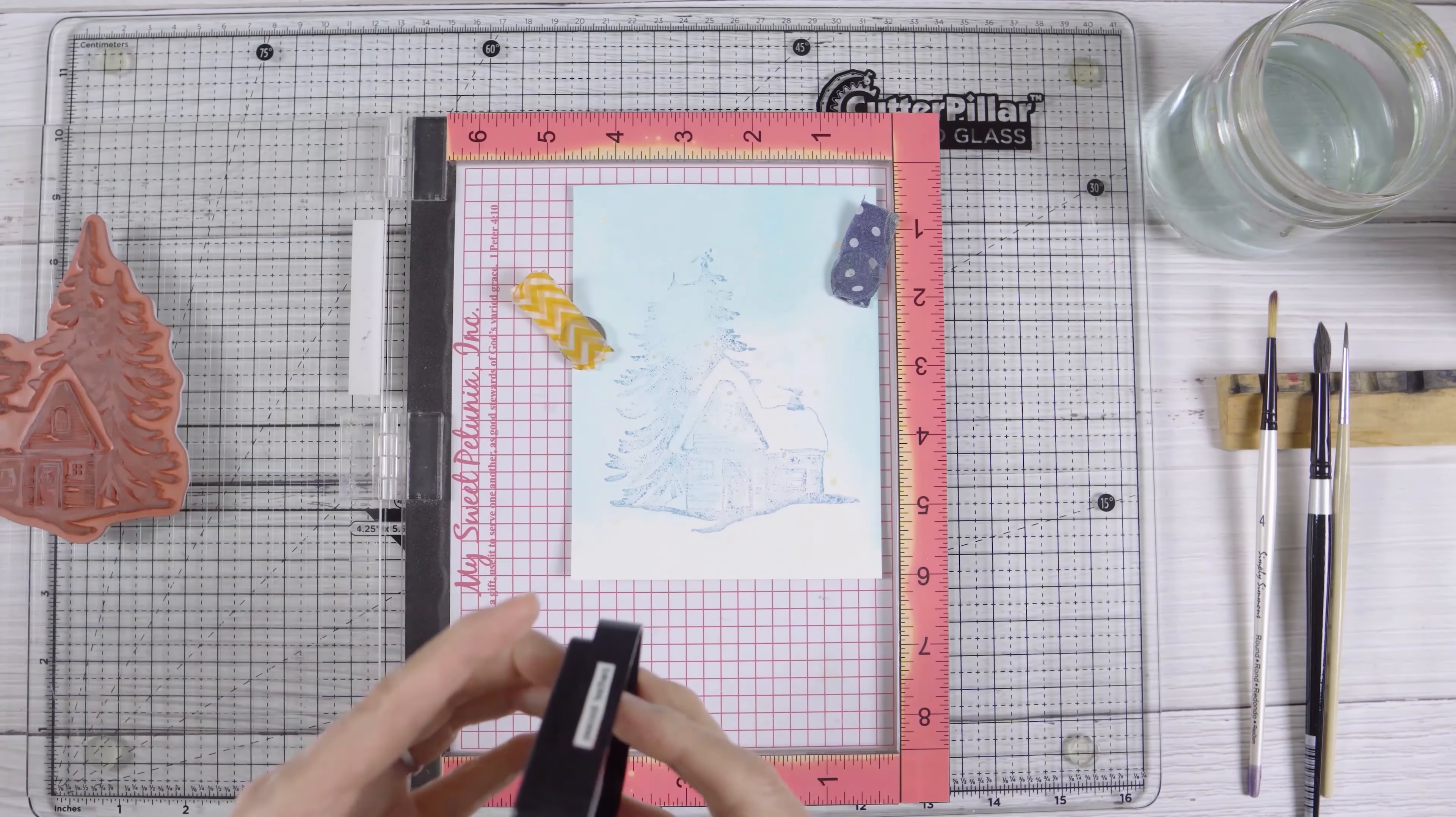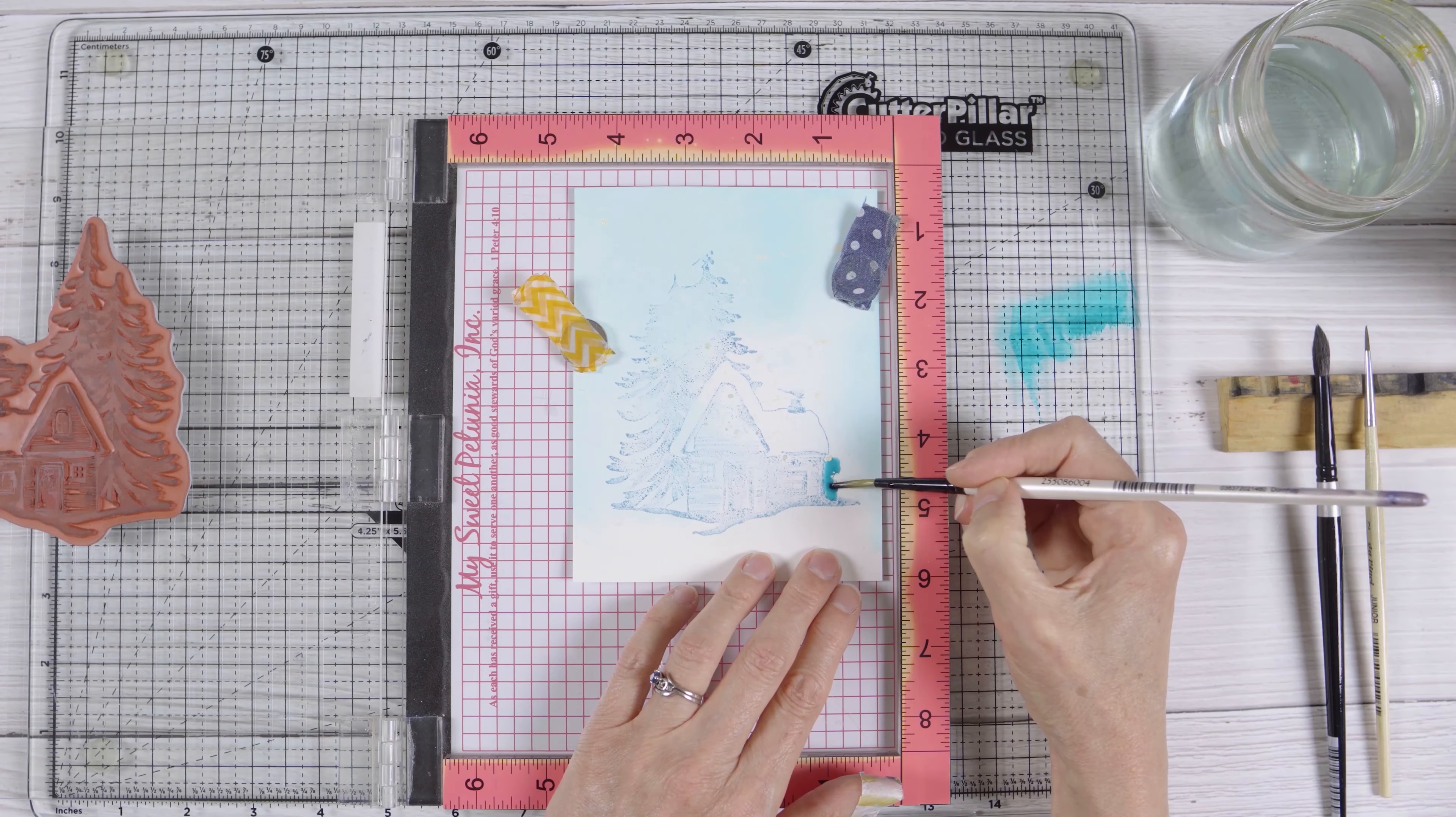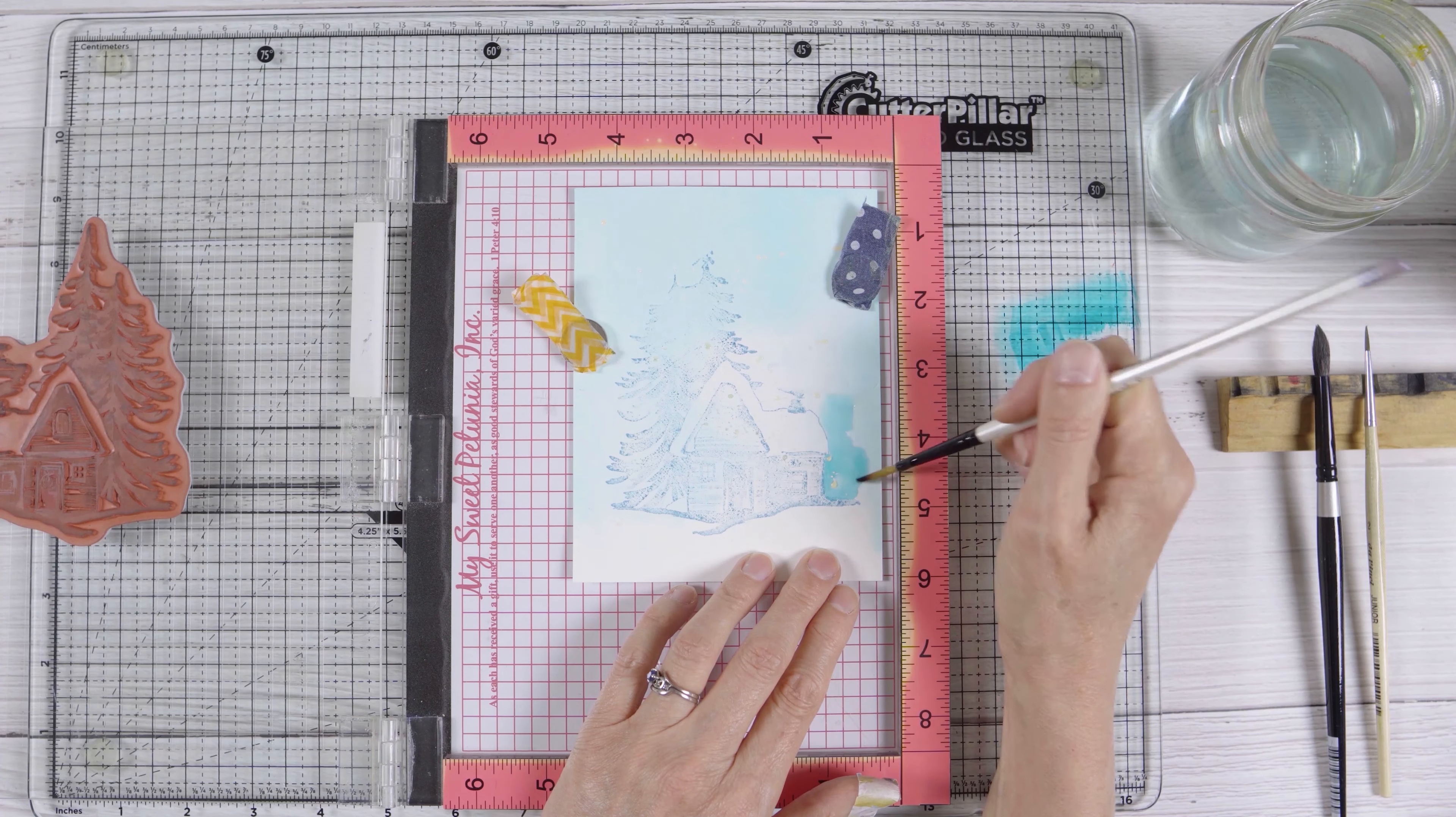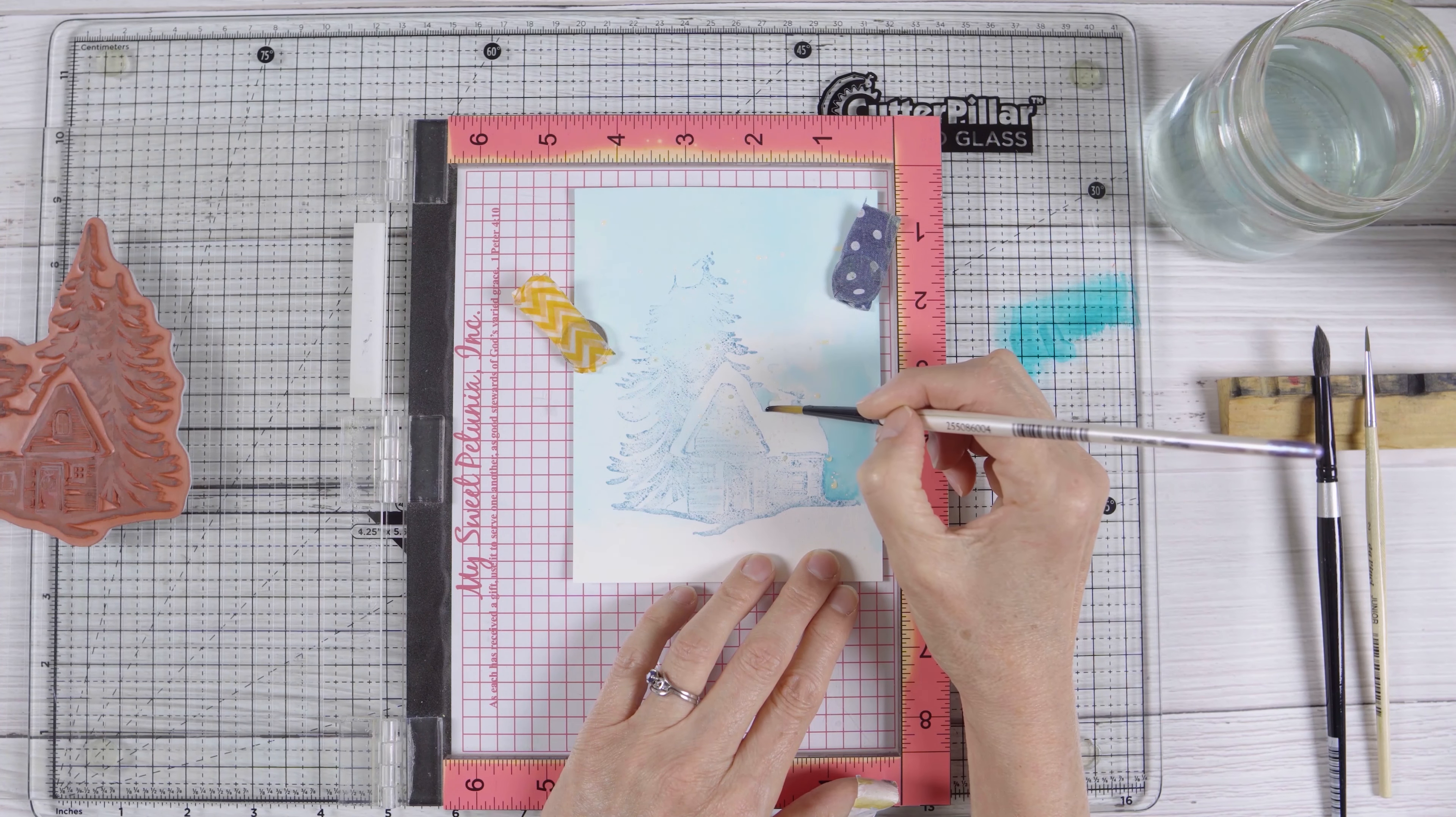I'm going to give myself some more of that peacock feathers distress ink because I'm painting some more of the sky. I'm going to go around the cozy cabin and remember this is the same color that I smooshed, that diluted sky before I even started stamping. So I want all the sky color to match, so I'm picking it up from the glass mat and then painting around the edge of the cabin. I'm keeping it fairly diluted so that it will end up blending into the ink that I already have on the panel.